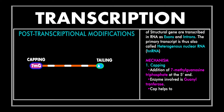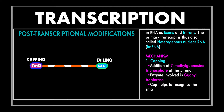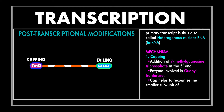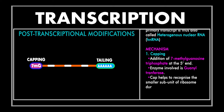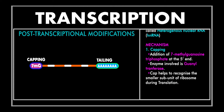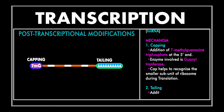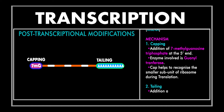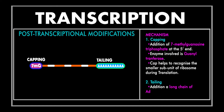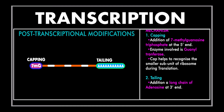The next step is tailing, which is the addition of a long chain of adenosine monophosphate residues, resulting in the formation of a poly-A tail. The enzyme polyadenylate polymerase is responsible for this activity. This step is important as it protects the RNA from three prime to five prime exonuclease activity.